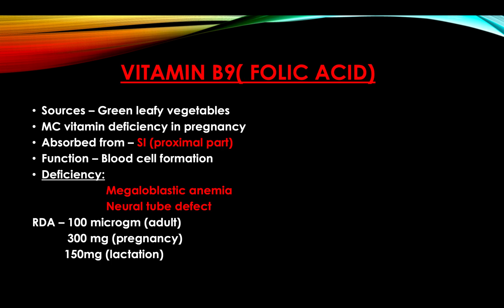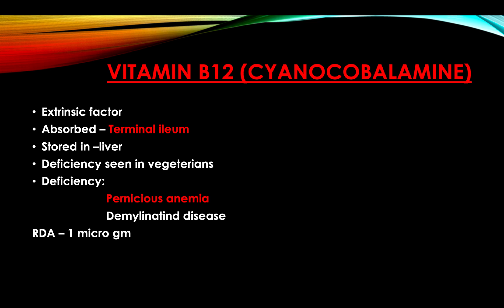Vitamin B9, or folic acid — sources include green leafy vegetables. It is the most common vitamin deficiency. Absorption occurs from the proximal part of the small intestine. Main function is blood cell formation. Deficiency produces megaloblastic anemia and neural tube defects in children. RDA is 100 micrograms in adults, 300 micrograms in pregnancy, and 150 micrograms in lactation.